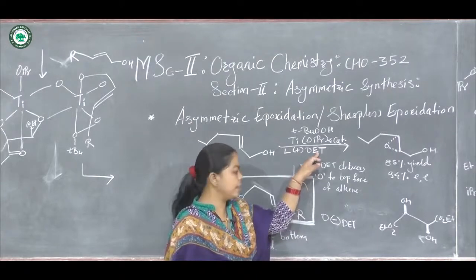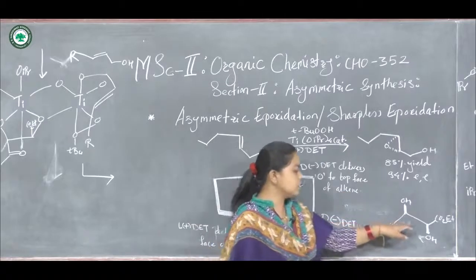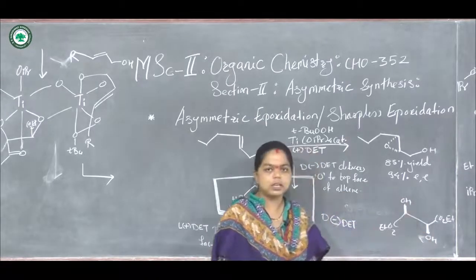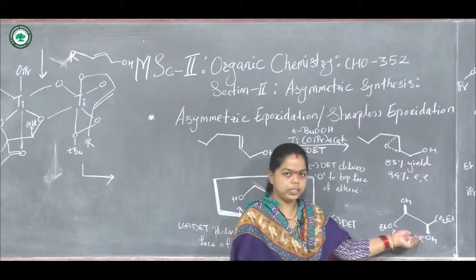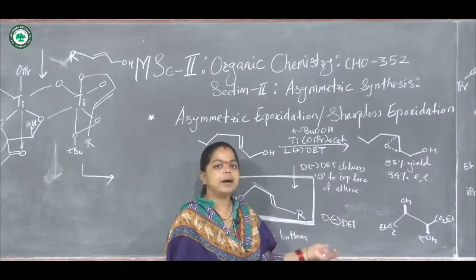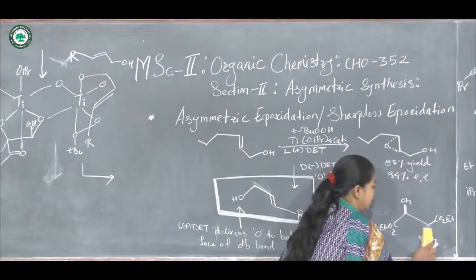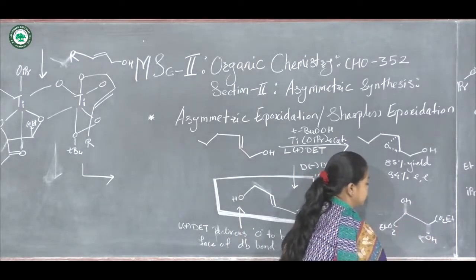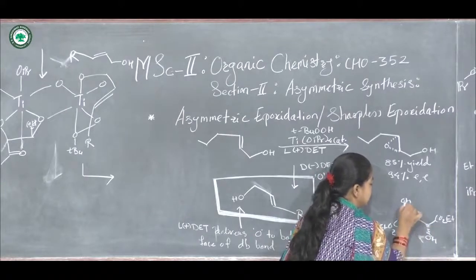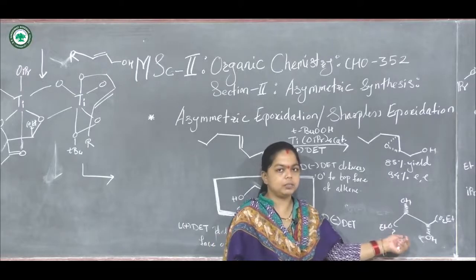The OH groups which are present in L-plus diethyl tartarate are beta-oriented, while in D-minus diethyl tartarate, the OH groups are alpha-oriented.